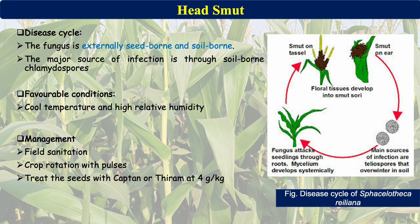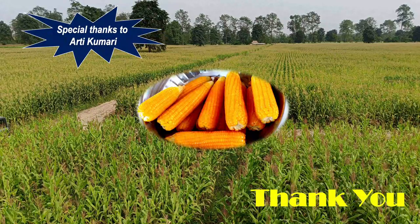For management of Head Smut, field sanitation is considered the best practice. Crop rotation for at least three years with non-host crops like pulses should be followed. Treat seed with Captan or Thiram at 4 grams per kg of seed prior to sowing in the main field. Thank you for watching this video; please continue to watch my YouTube channel for more videos.